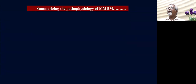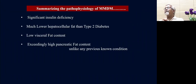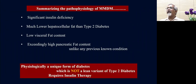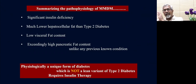To summarize the pathophysiology of malnutrition-modulated diabetes: they have significant insulin deficiency, much lower hepatocellular fat than type 2 diabetes, low visceral fat content, and exceedingly high pancreatic fat content unlike any previously reported condition. Physiologically, they are a unique form of diabetes — not a lean variant of type 2. They require insulin, whereas type 2 diabetes can be well managed with oral anti-diabetic agents in the initial phases.